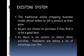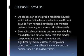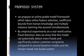The traditional online shopping business model allows sellers to sell a product at their price, and buyers can choose to purchase if they find it to be a good deal. As there is no system to detect these activities, fraudsters are taking a lot of advantage. We propose an online profit model framework which takes online feature selection, coefficient bounds from human knowledge, and multiple instance learning into account simultaneously. By empirical experiments on real-world online fraud detection data, we show that this model can potentially detect more frauds and significantly reduce customer complaints compared to several baseline models.